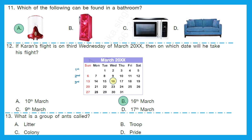Question 13: What is a group of ants called? A group of ants is called a colony. Option C is the right answer.